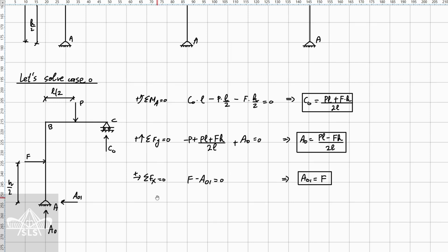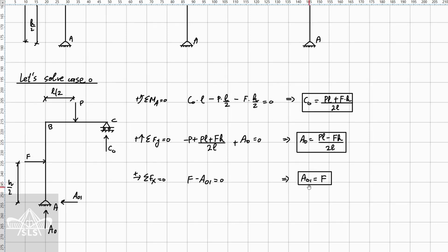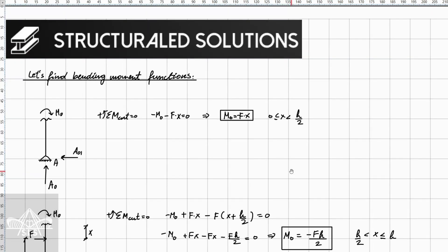We continue to solve case zero. Now that the frame is statically determinate, we use equilibrium equations to find the support reactions. Taking the sum of moments at point A equal to zero gives C₀ parametrically. Sum of forces in Y gives A₀, and sum of forces in X gives A₀₁, as shown.